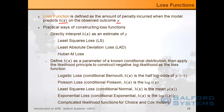To go back to the very beginning of this miniseries, our goal is to construct the response surface h of x, which is the predicted response that is somehow connected to the observed outcome y. There are many different ways of constructing loss functions. You can directly interpret h of x as an estimate of y, and that brings you to least squares loss, LAD loss, and Huber M loss. Or you can define h of x as a parameter of a known conditional distribution and then apply the likelihood principle. Most notably, you can introduce logistic loss.